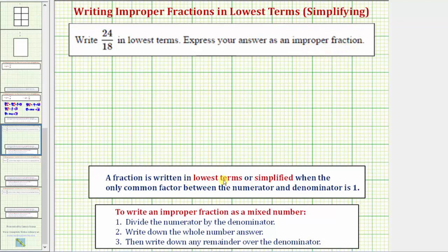A fraction is written in lowest terms or simplified when the only common factor between the numerator and denominator is one. So 24 eighteenths is not in lowest terms because 24 and 18 share common factors other than one.